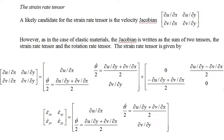The Jacobian of the u and v velocities is a candidate for the strain rate tensor. However, as was the case for elastic objects, we need to partition the Jacobian into a symmetric strain rate tensor and an anti-symmetric rotation rate tensor. The strain rate tensor has the partial derivatives of u with respect to x and v with respect to y on the diagonal, and the sum of the partial derivative of u with respect to y and the partial derivative of v with respect to x divided by 2 on the off-diagonals.